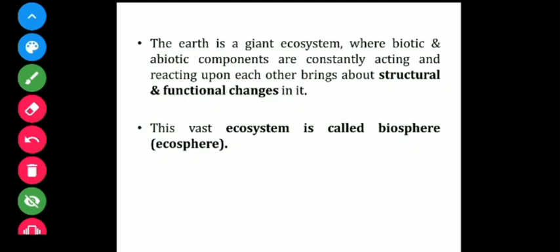The ecosystem includes biotic and abiotic components, and interaction between those components brings about structural and functional changes. For example, from the bio-geochemical cycle I can pick up the nitrogen cycle. Nitrogen is a main element for plant growth and development — it is a source of protein, DNA, etc. — and plants require nitrogen for their growth.